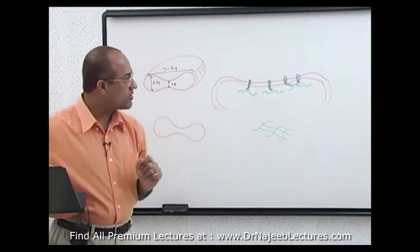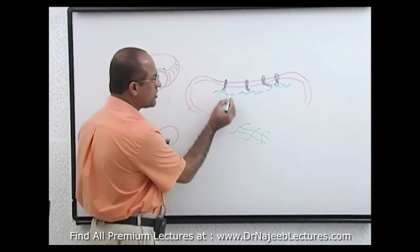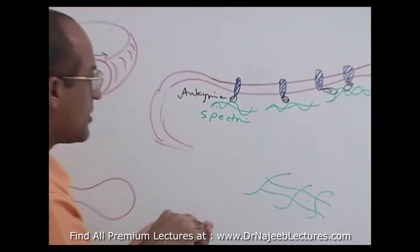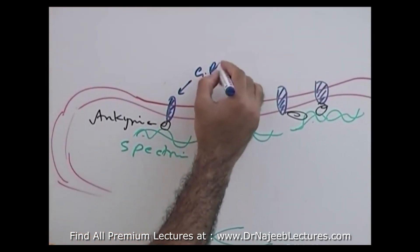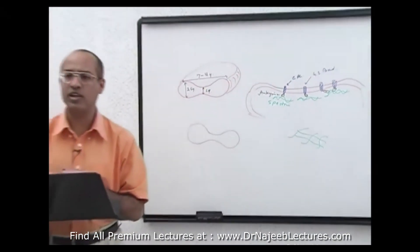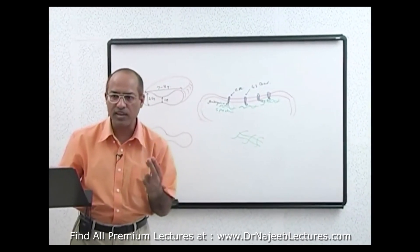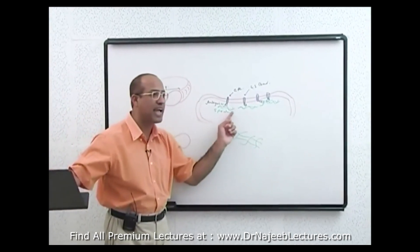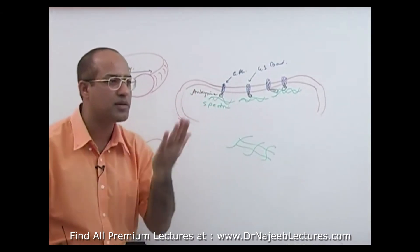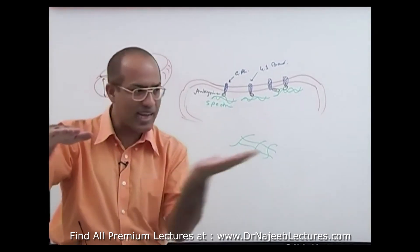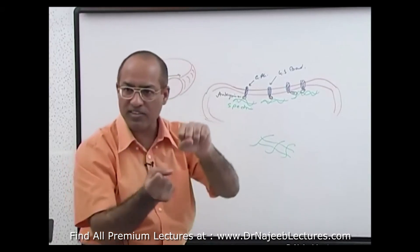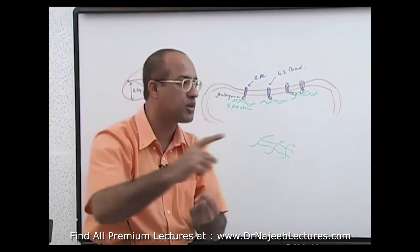If you want to know the names of these proteins: the network proteins are called spectrins; the proteins anchoring the network to the membrane are called anchirins. Other proteins involved include actins, tropomyosins, band 4.1, band 3 protein, and glycophorins. There is no need to remember all of these names — just remember the basic concept: spectrins form the network under the membrane, and anchirins and other proteins anchor this network to the membrane, keeping it flexible and intact.